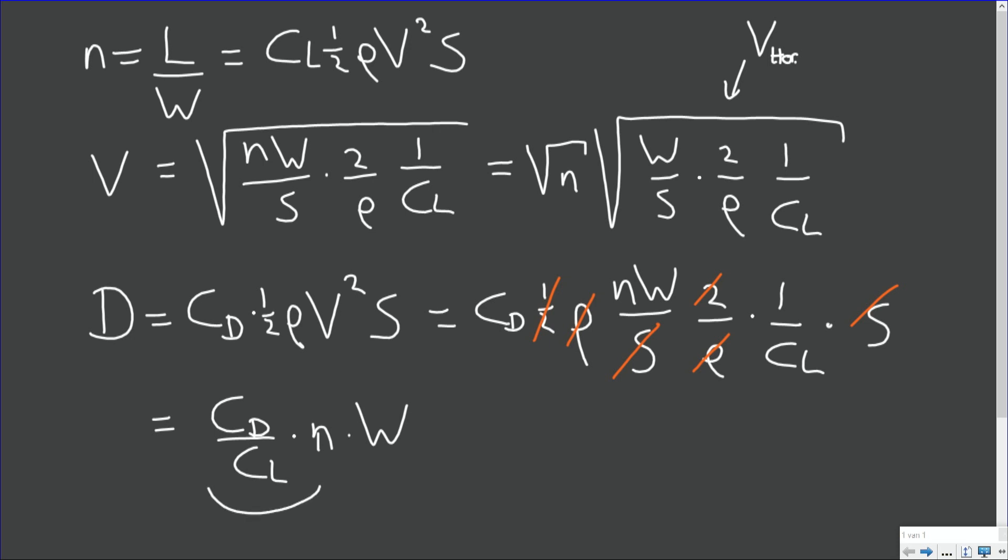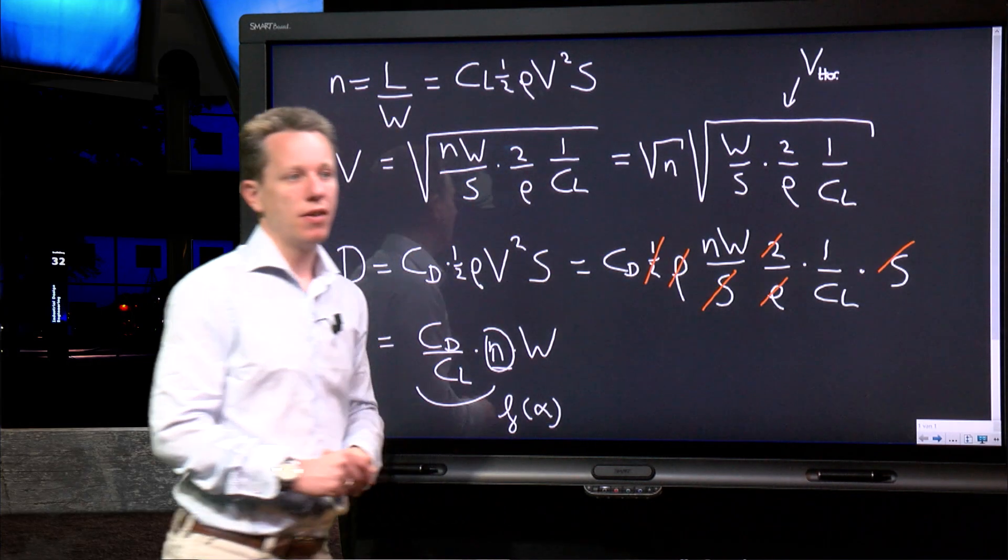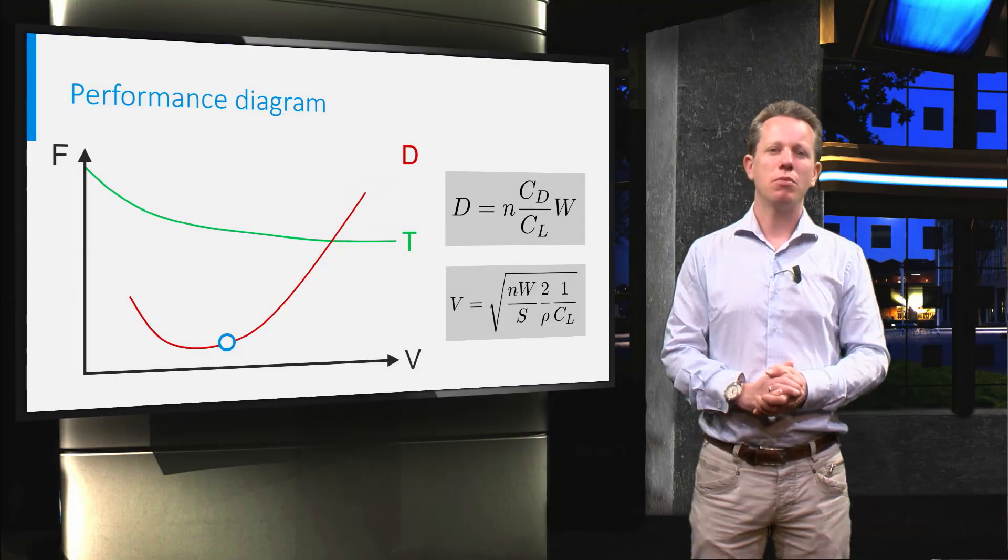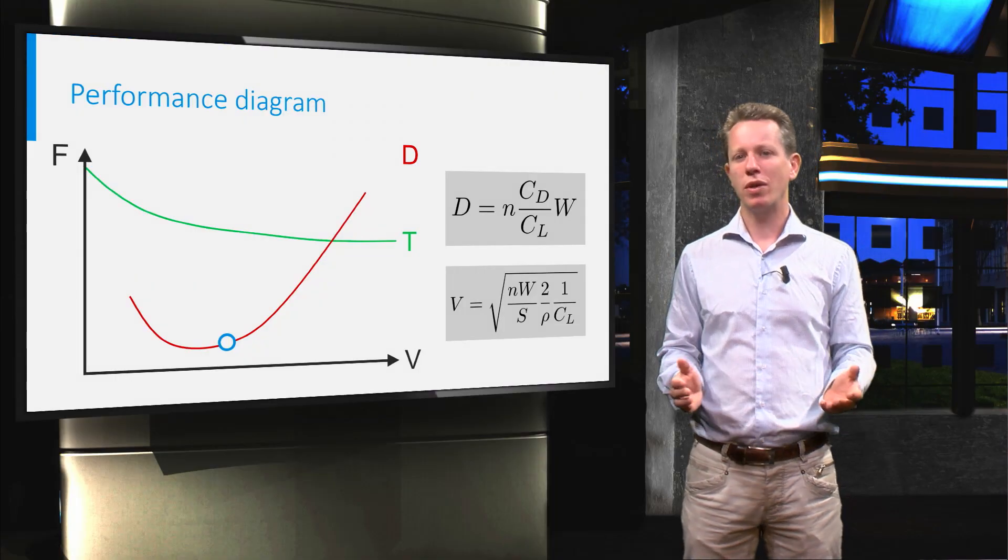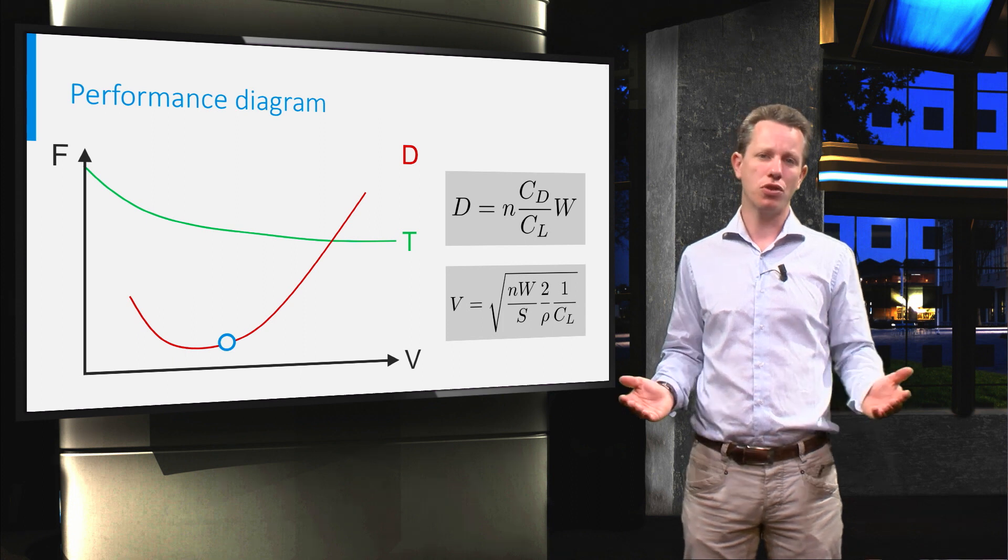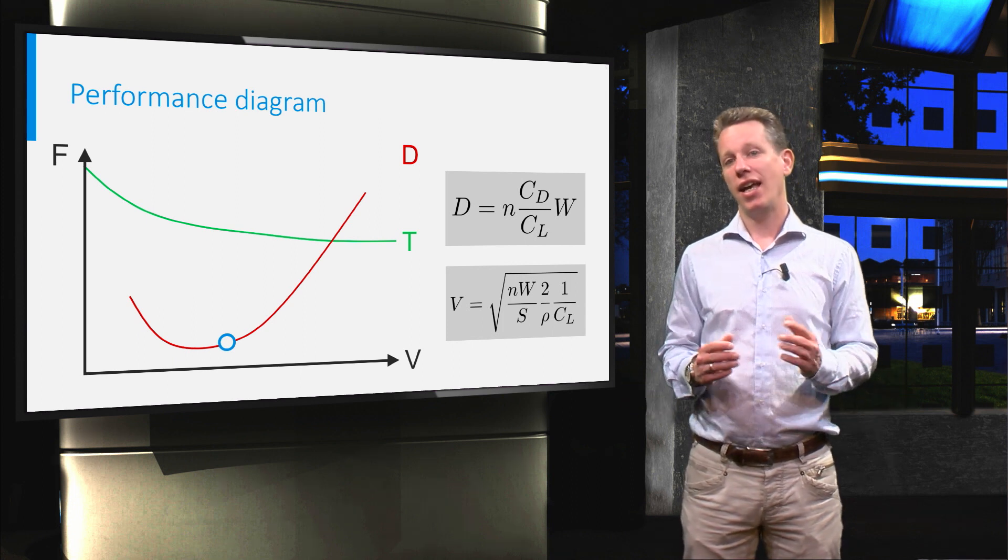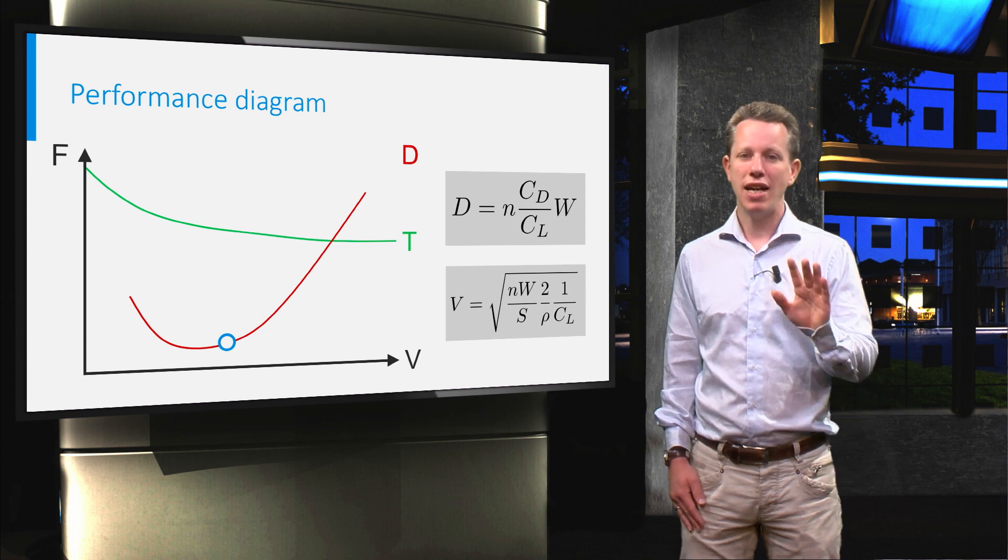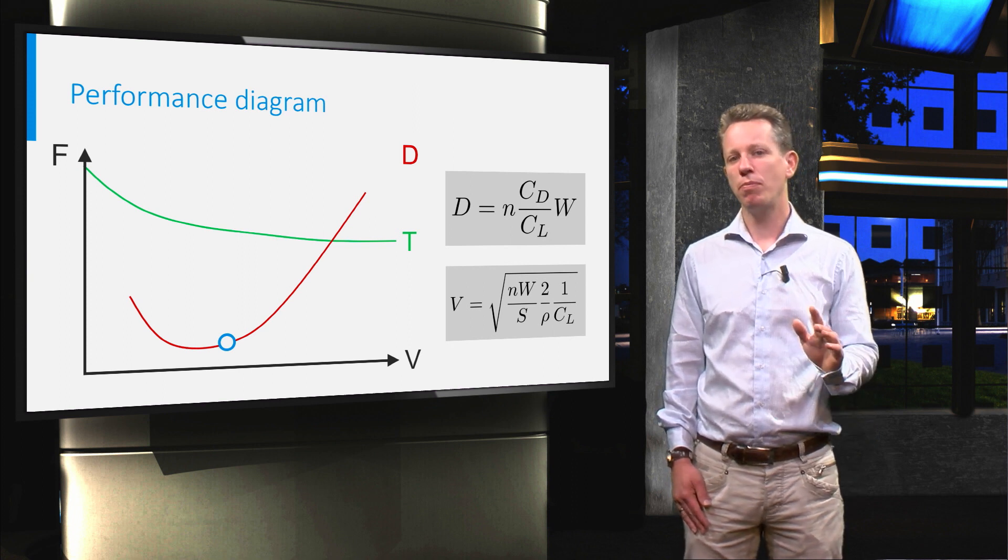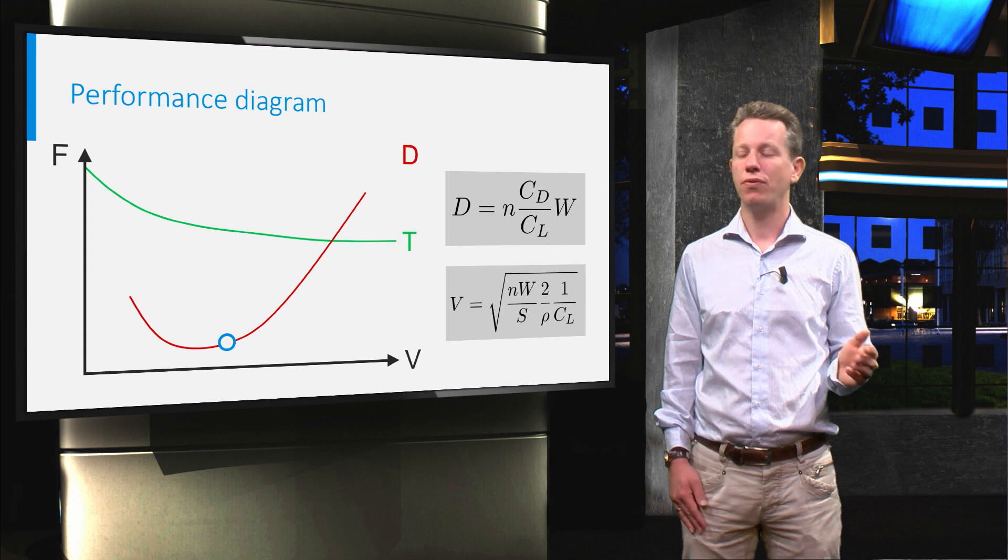So in fact CD and CL are only a function of the angle of attack, so we kept those constant. So essentially if drag increases with load factor, then it's proportional to the load factor. Thus the airspeed must increase proportional to the square root of the load factor to maintain the vertical force equilibrium in case angle of attack is kept constant. The drag however will increase proportional to the load factor for a fixed angle of attack.